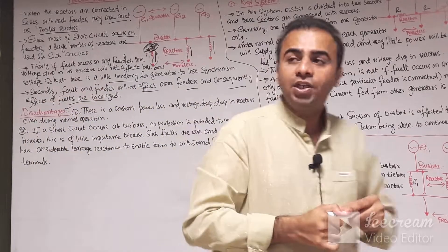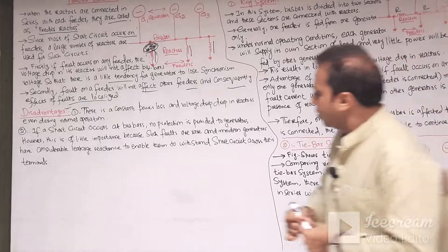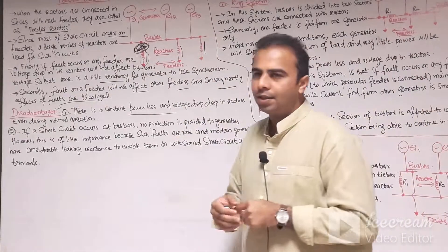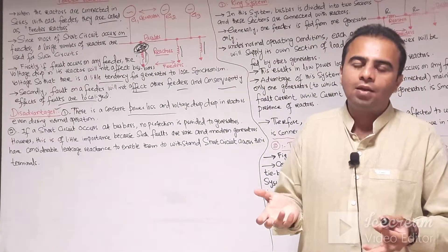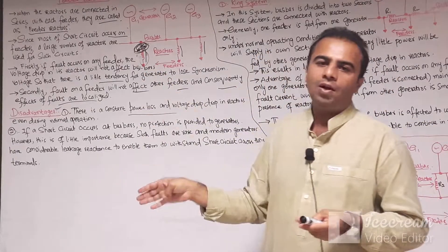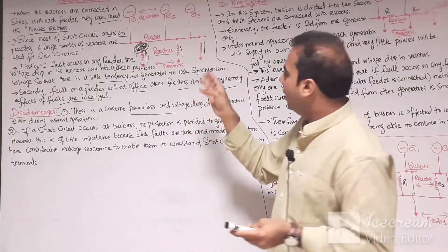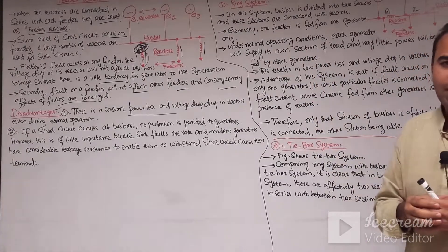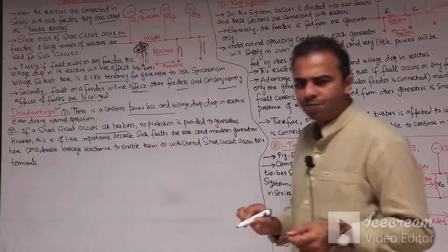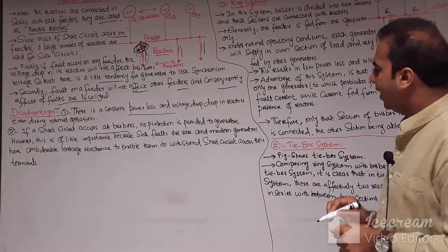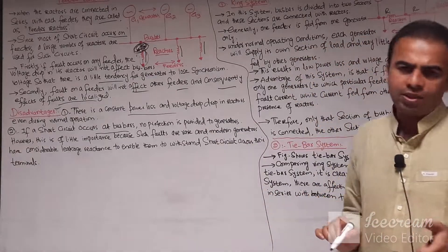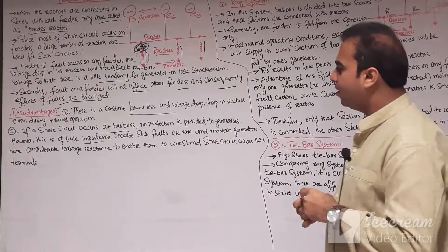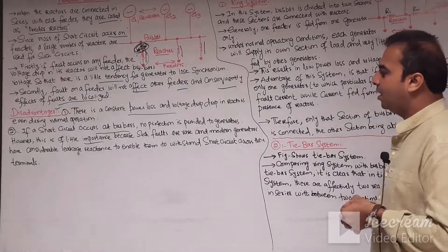Let us discuss the disadvantages of the feeder reactor. There is a constant power loss and voltage drop in the reactors during normal operating conditions, because reactors are leakage reactances — during normal operating conditions of any feeder, voltage drop and power loss across the feeders can be observed. Second, if a short circuit occurs at the bus bars, no protection is provided to the generator. However, this is of little importance because such faults are rare and modern generators have considerable leakage reactance to withstand the short circuit current.